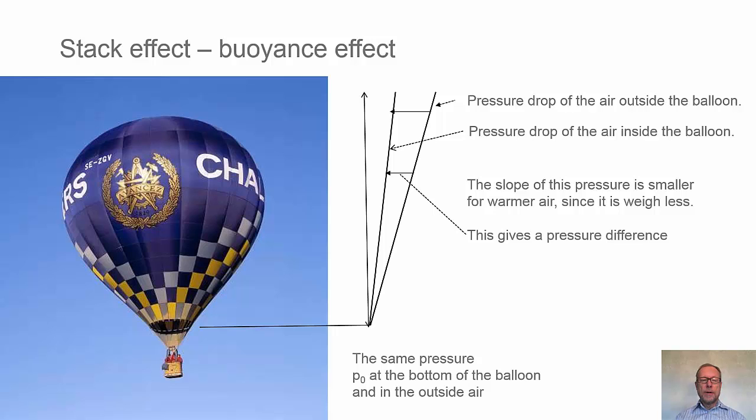If we see in the bottom, just above the people there in the basket, we have a certain air pressure that will be equal just below the balloon and outside the balloon. Otherwise there will be a lot of air movements. So we can say that we have the same air pressure down there in the bottom.